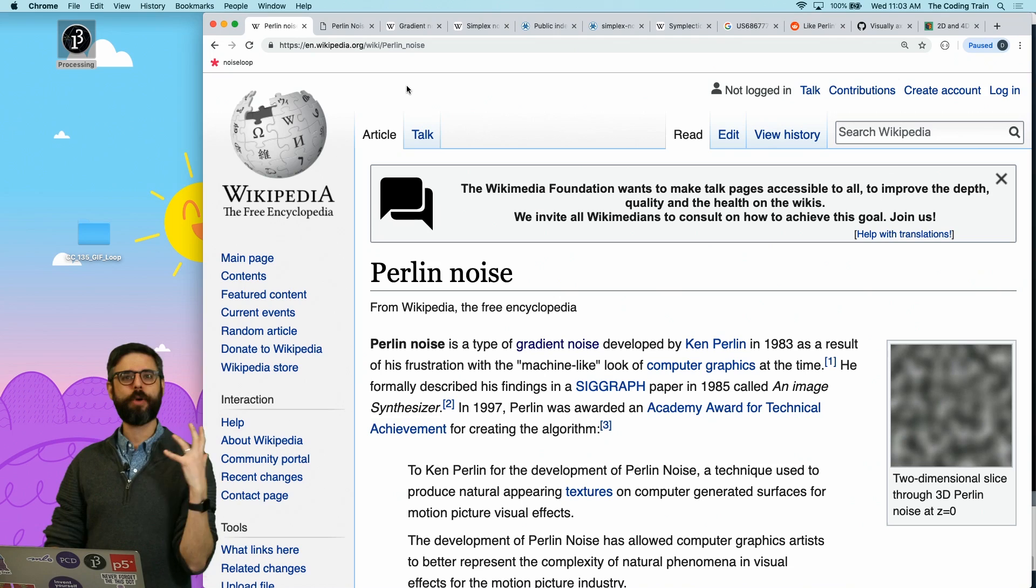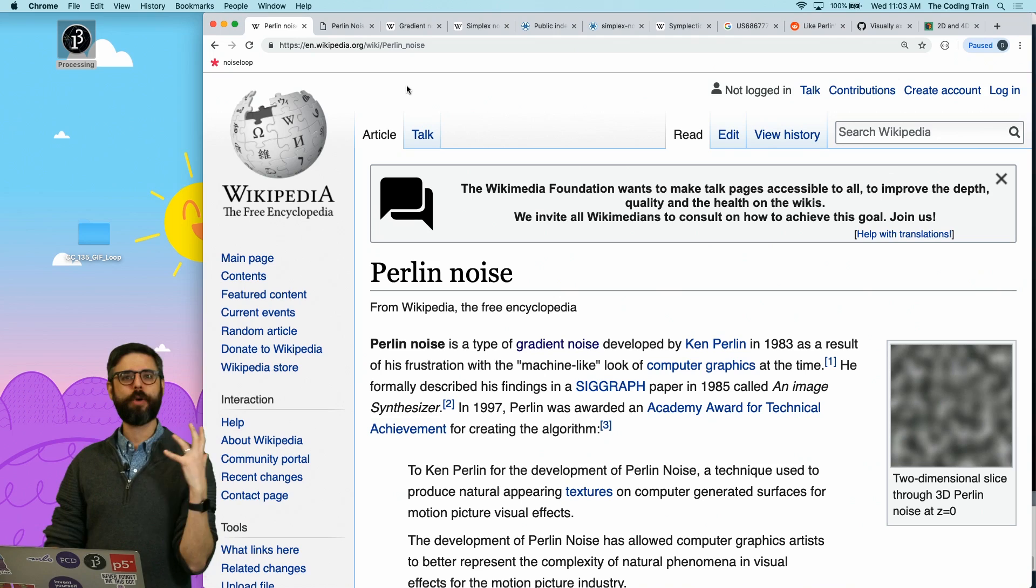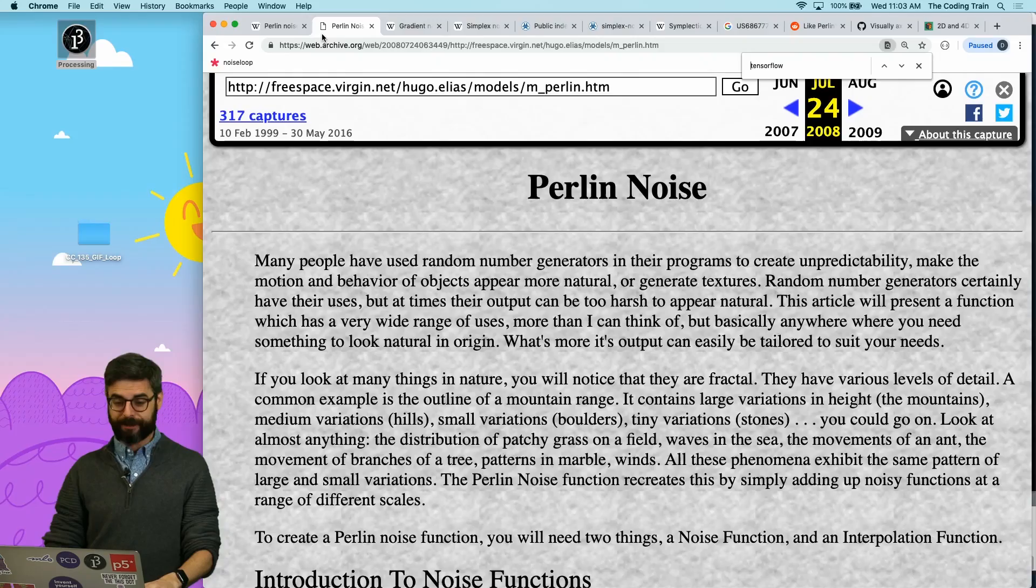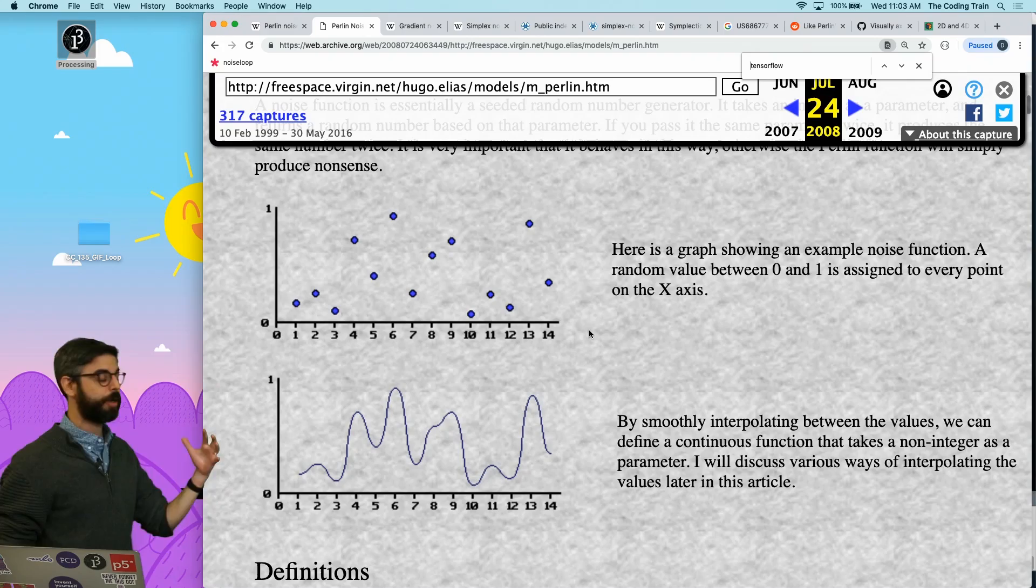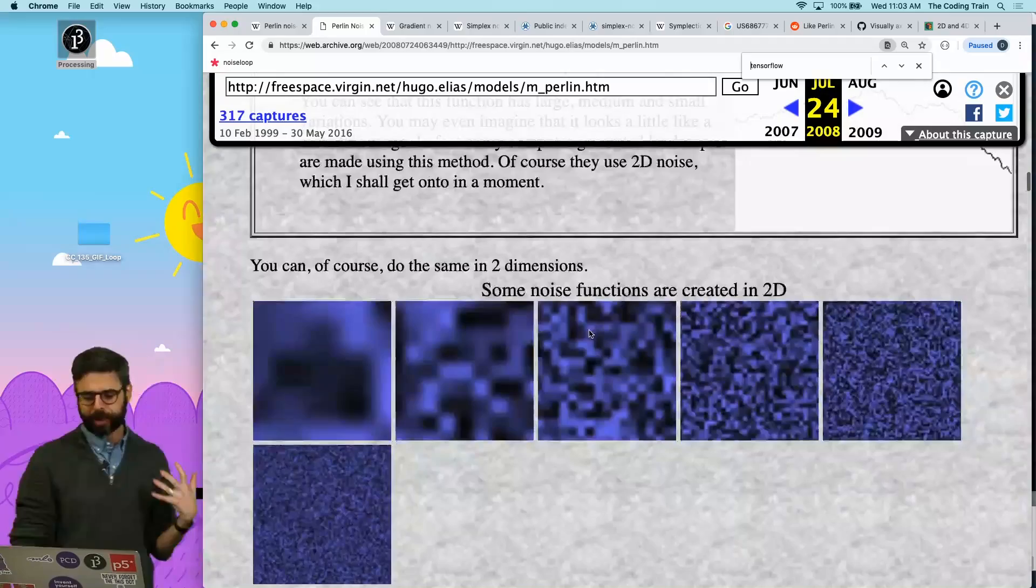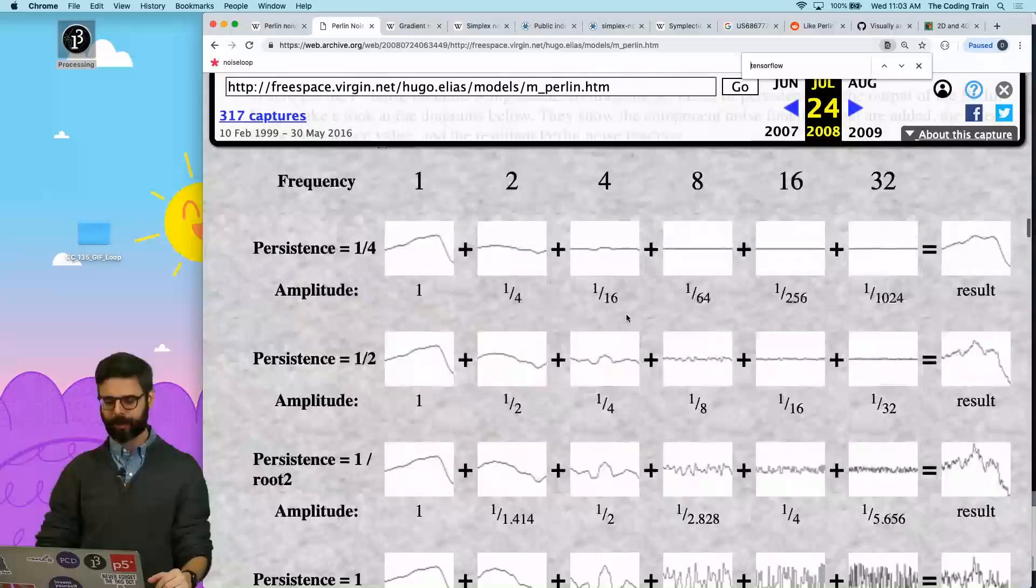Where I first learned about how the Perlin noise algorithm actually worked was from an article written by Hugo Elias. Yes, this page is no longer on the internet, but you can find it through web.archive.org. This is a wonderful introduction to noise functions, talks about random sampling, interpolation, amplitude and frequency, octaves, and looks at this gradient smoothing process that happens to create Perlin noise.